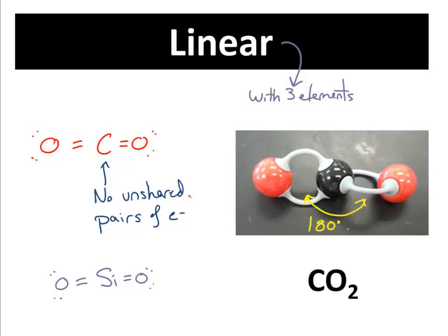Linear, in this case, is CO₂. Anytime you have three elements, you have two choices: bent or linear. CO₂ is going to be linear and spread out to 180 degrees — a straight line — because there is no unshared pair of electrons on the central atom. All the electrons have gone into the bonds. Similarly, silicon dioxide forms two double bonds with no unshared pairs of electrons around the central atom, so they can spread out to 180 degrees for maximum distance.